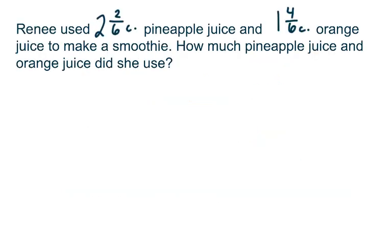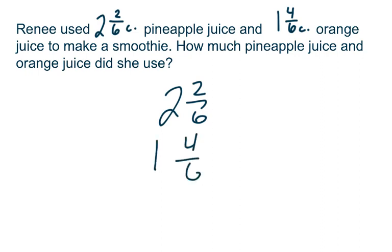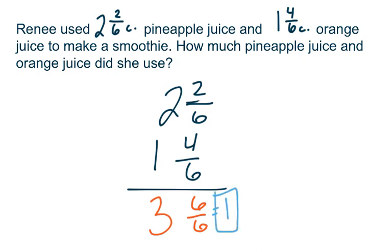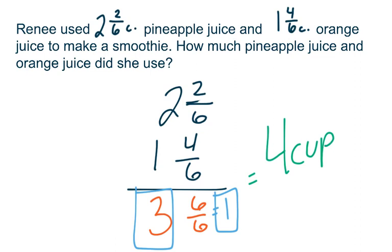Our last problem: Renee used 2 and 2 sixths cups of pineapple juice and 1 and 4 sixths cups of orange juice to make a smoothie. How much juice did she use in total? We add 2 and 2 sixths plus 1 and 4 sixths. Adding the fractions gives 6 sixths, and the whole numbers give 3. Since 6 sixths equals 1 whole, we add 1 whole plus 3 to get 4 cups. Renee uses 4 cups of orange juice and pineapple juice to make her smoothie.